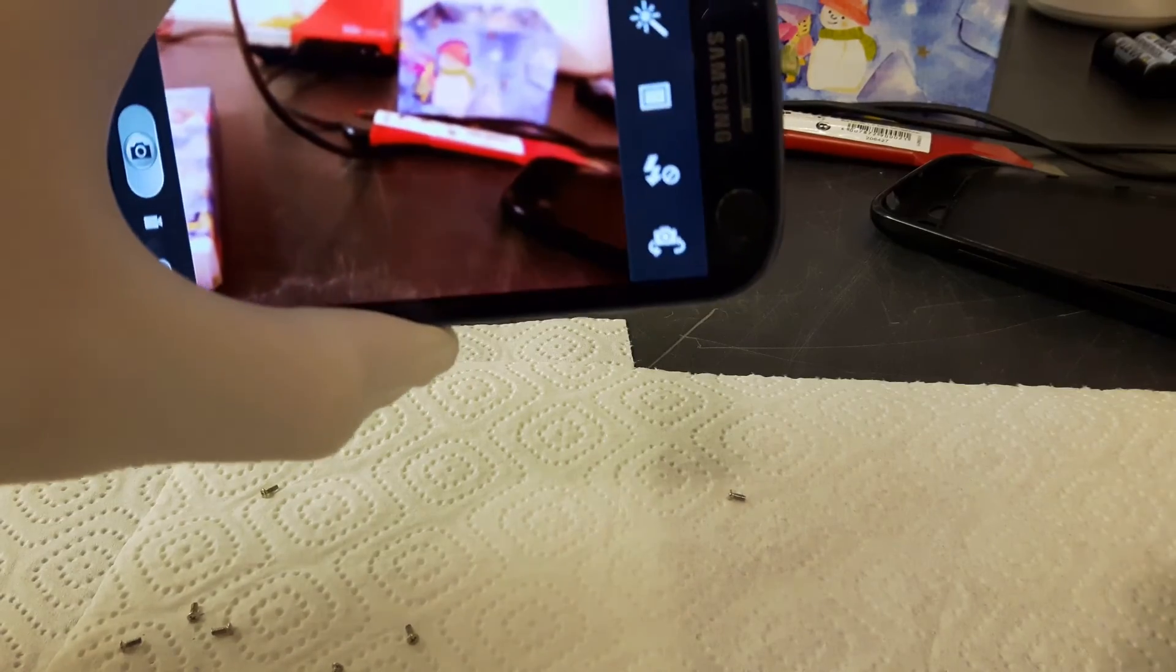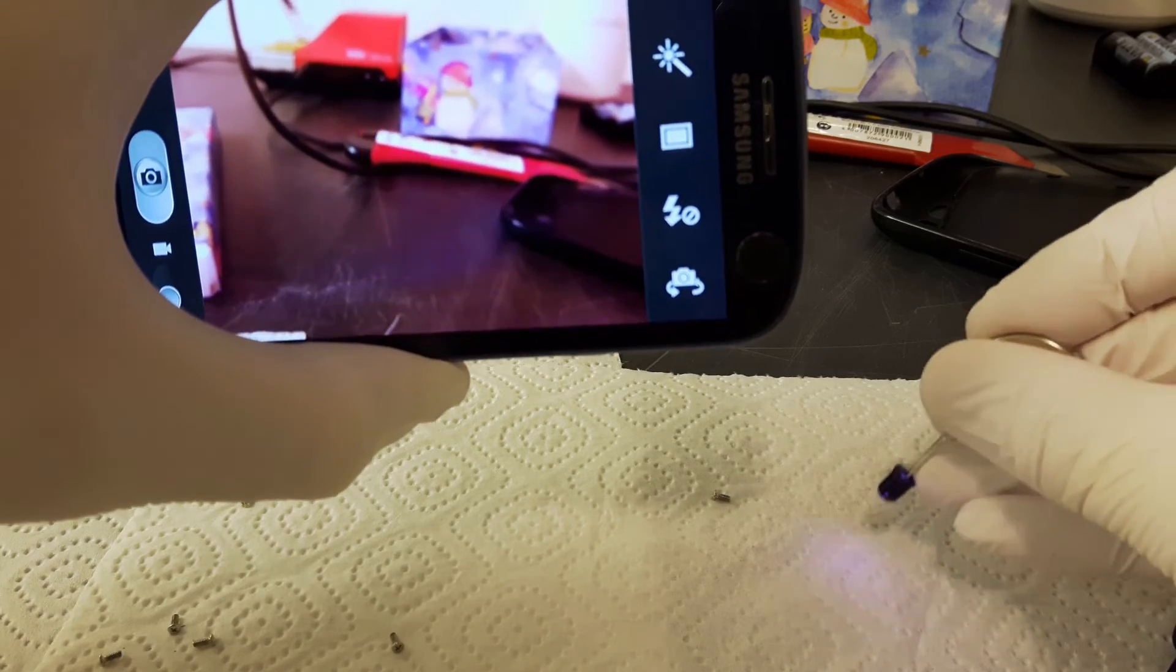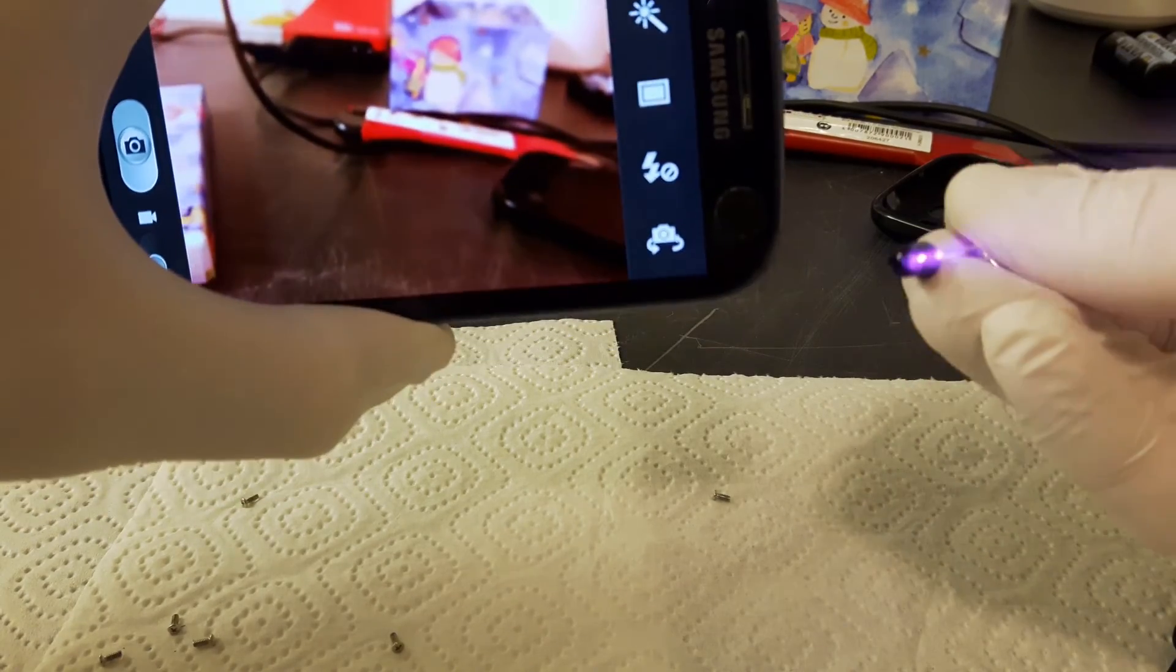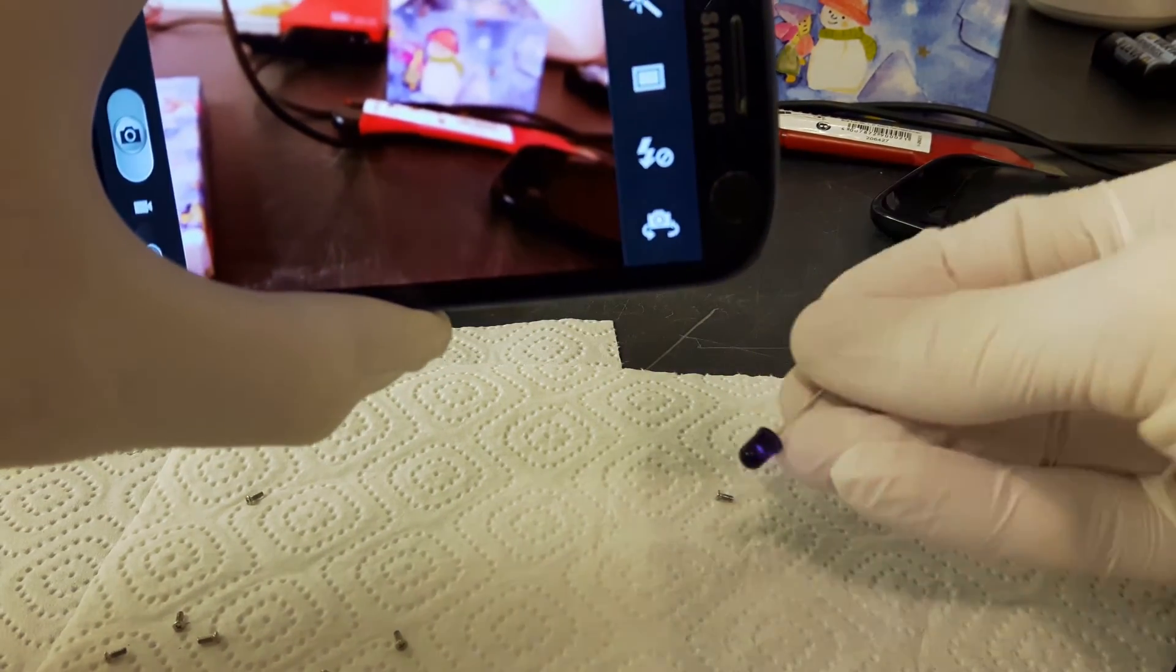Actually, here are two IR filters in front of the camera. One inside and one in my hand. And they filter about 95% of the IR light.